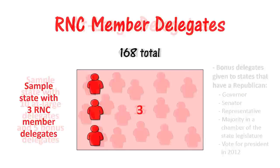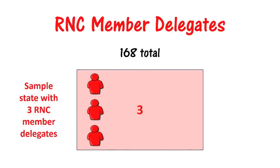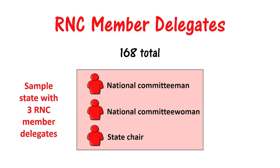Each state gets three RNC Member Delegates — these are each state's National Committee Man, National Committee Woman, and State Chair. Most states allow these delegates to be unbound, meaning they can support any candidate they choose.